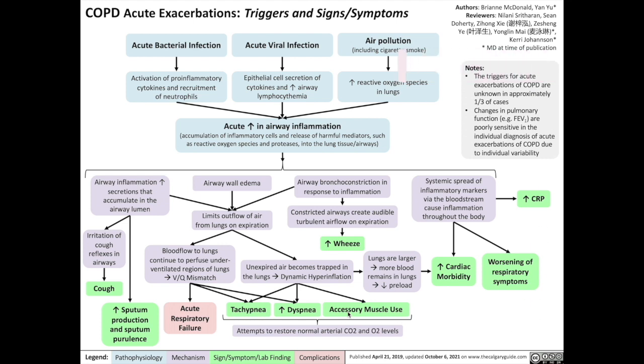COPD acute exacerbations can be caused by three main factors: acute bacterial infection, acute viral infection, and air pollution such as cigarette smoke.